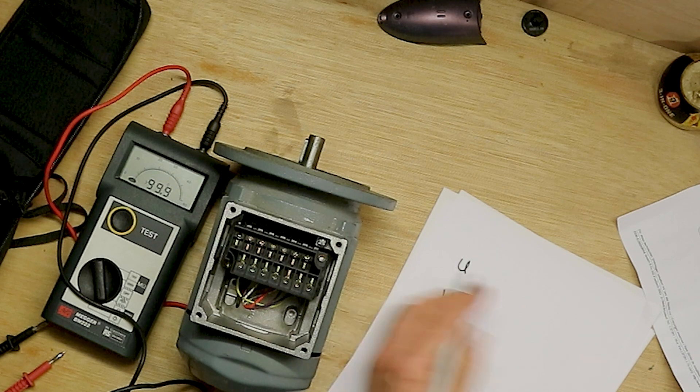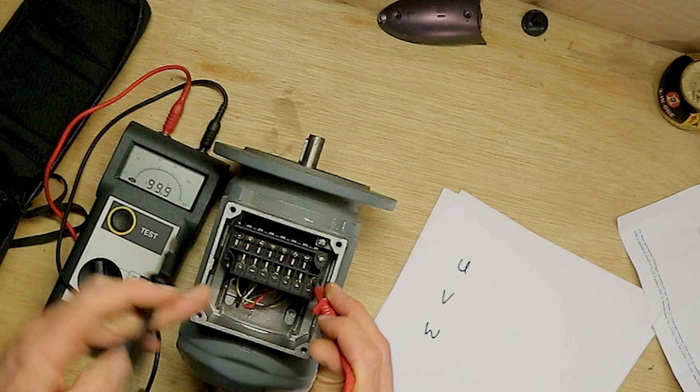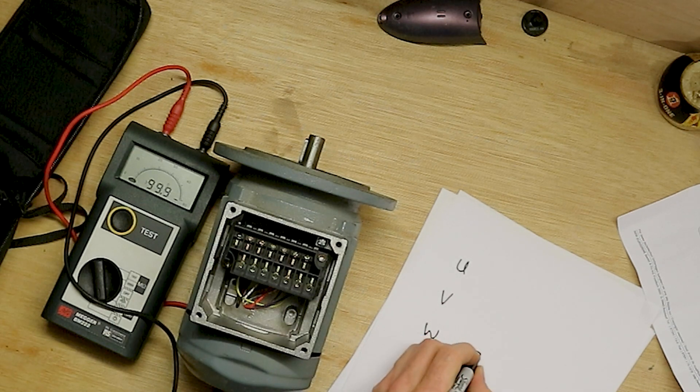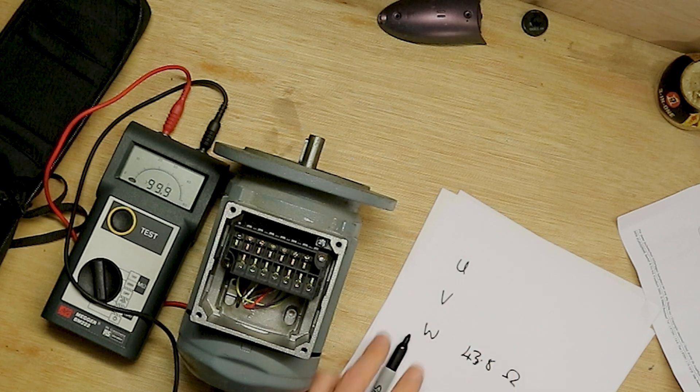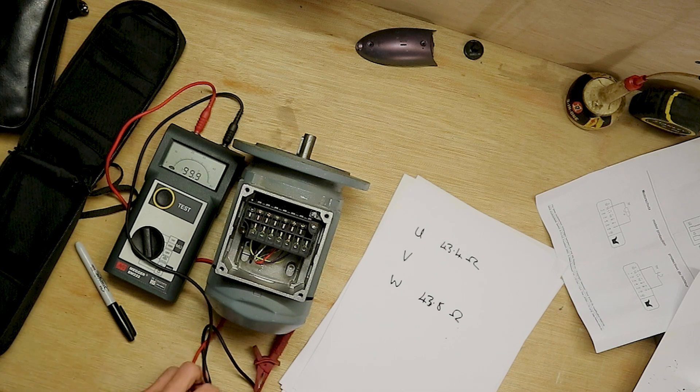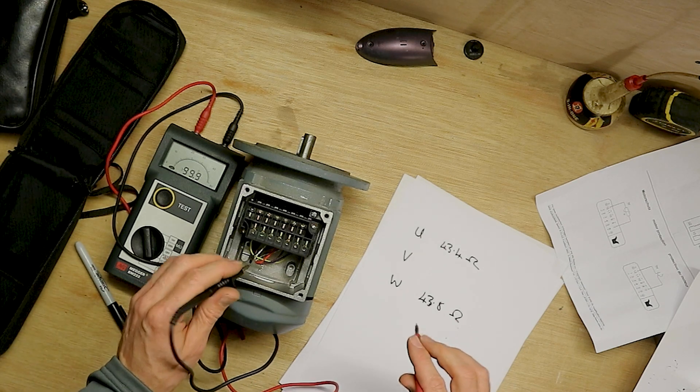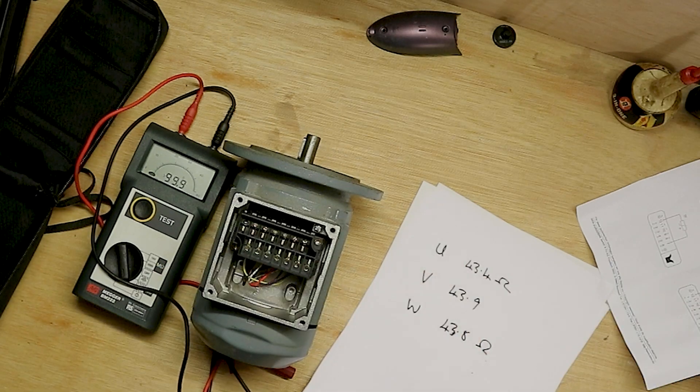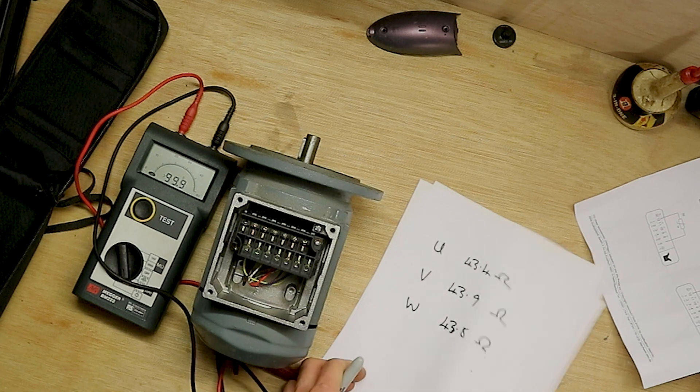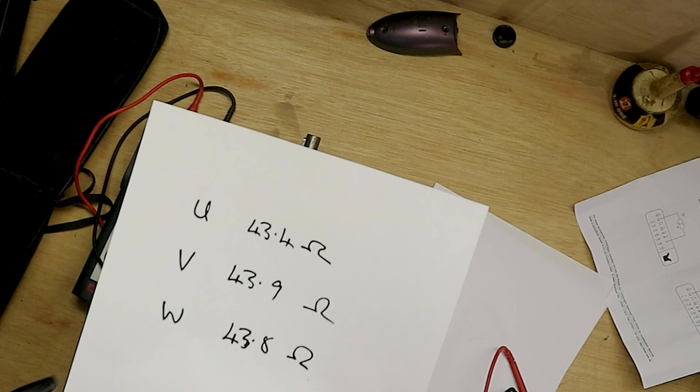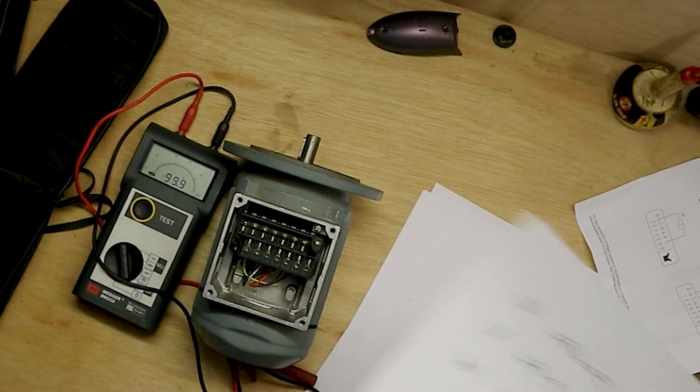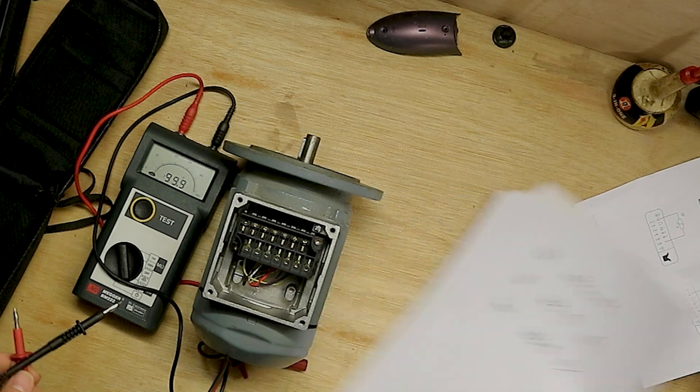U, V, W. W we've just done. We'll do it backwards. 43.8 ohms. U is two and three, 43.4. And V is 43.9. So from that, they are relatively balanced. There's not a massive amount of difference between them all. And we can be fairly happy with that. If we were starting to see a big discrepancy in the variations there, then we would think that we possibly have a problem. So let's now move on to our other checks.